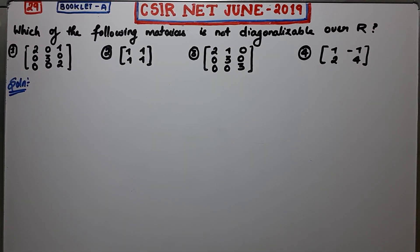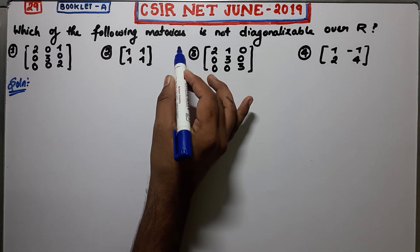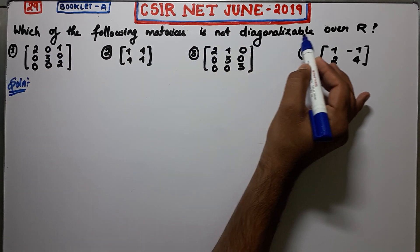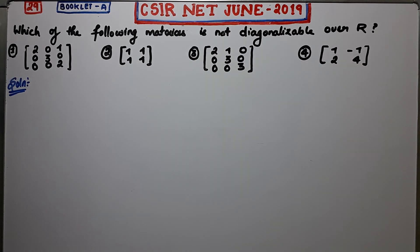Welcome guys, this is question number 29 of booklet A from CSIR NET June 2019. It is a question of diagonalizability from part B of the paper. Let us firstly read the question: which of the following matrices is not diagonalizable over R? These are your four options and you have to check which is not diagonalizable.